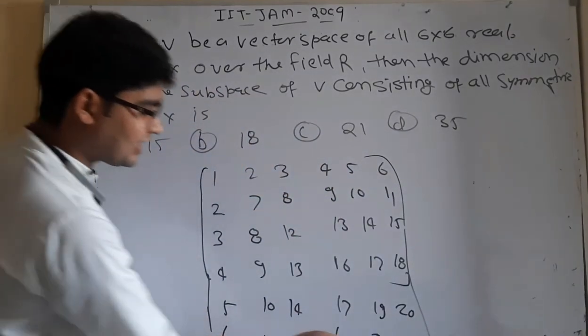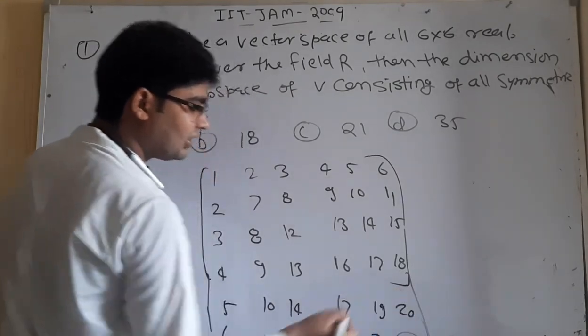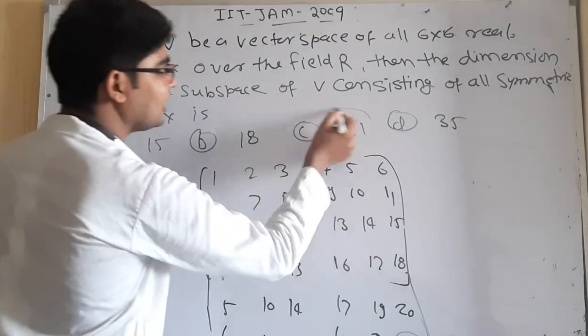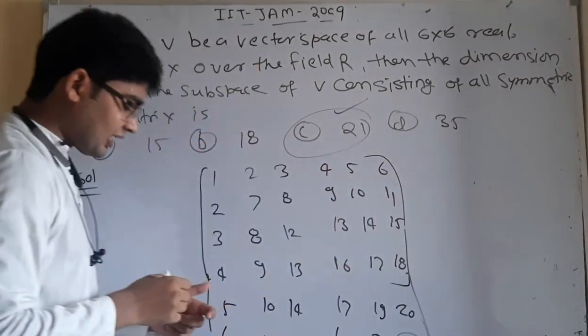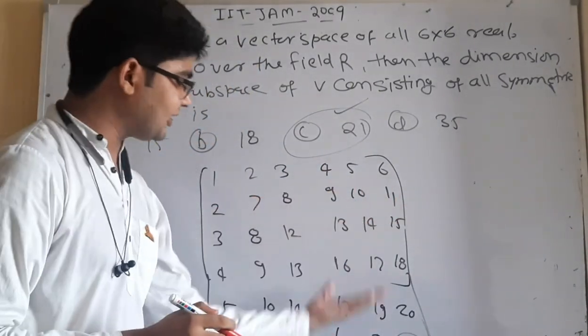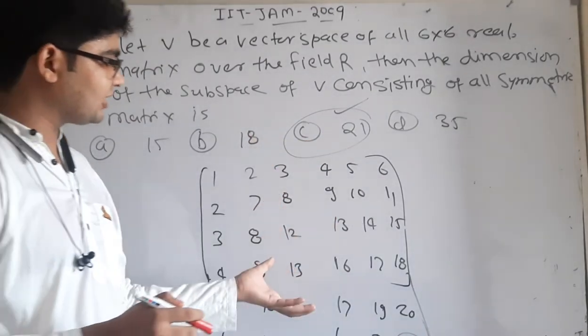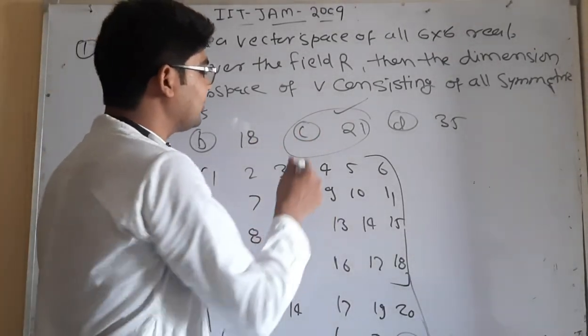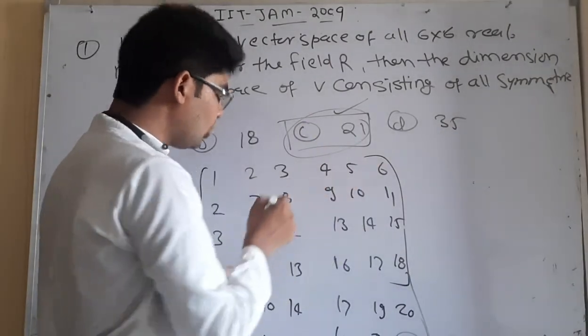So this is the total number, the final number. The last final number is 21. So the dimension is 21. 21 is the correct answer. Because the symmetric matrix is the same, the total numbers can be 21. So if we have this dimension, it can be 21.